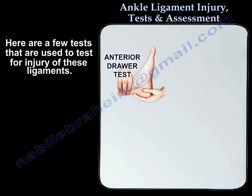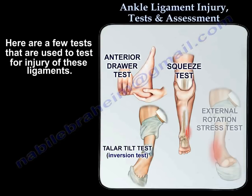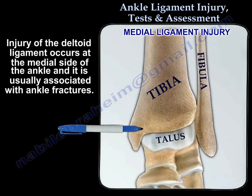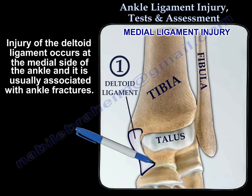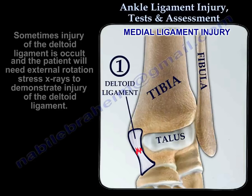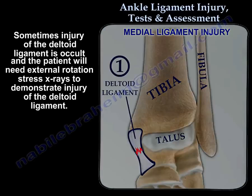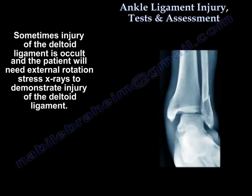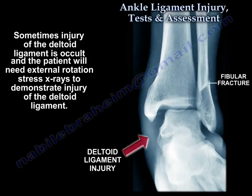Here are a few tests that are used to check for injury of these ligaments. If the patient cannot bear weight on the ankle, the patient should get an x-ray of the ankle. Injury of the deltoid ligament occurs at the medial side of the ankle and it is usually associated with ankle fractures. Sometimes this injury of the deltoid ligament is occult, and the patient may need stress x-rays to demonstrate injury of the deltoid ligament.